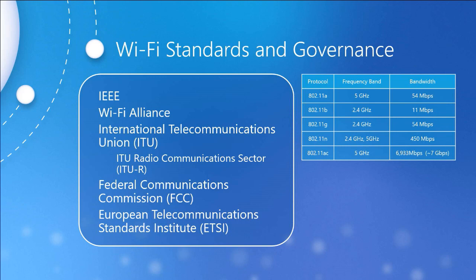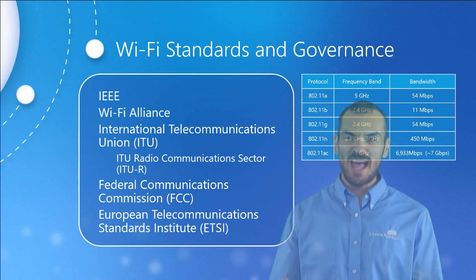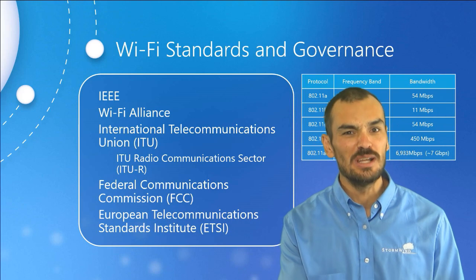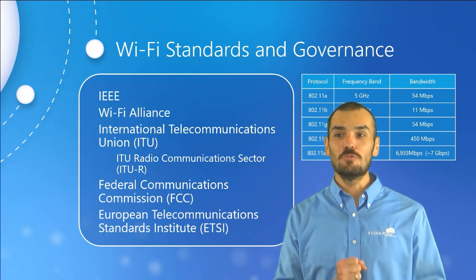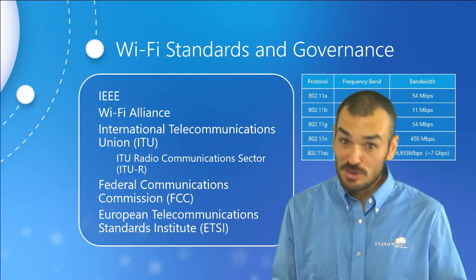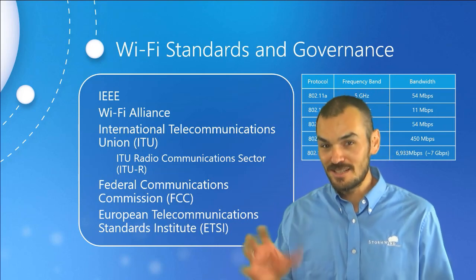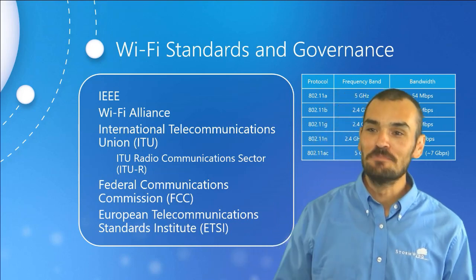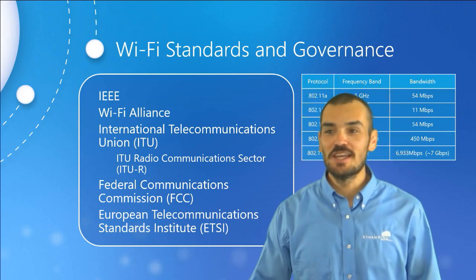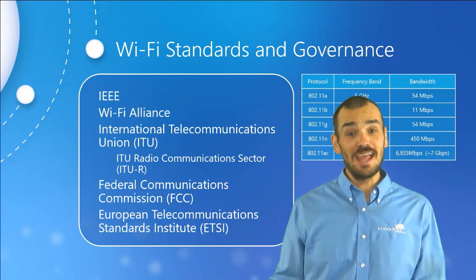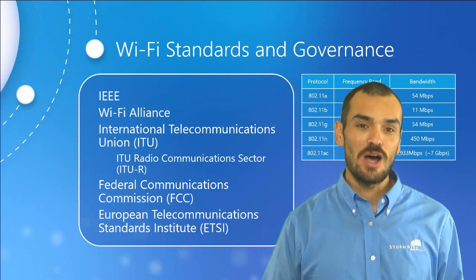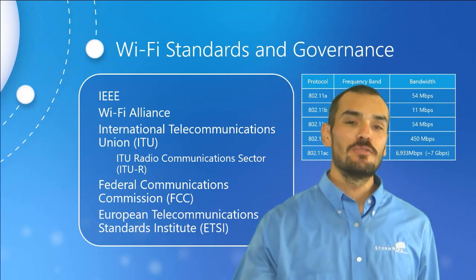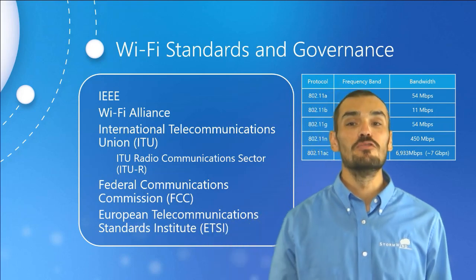To use an analogy: if we were making a chocolate cake, the 802.11 standards would be the flour, the eggs, the milk — the core ingredients. But Cisco may want to make a chocolate cake with an orange ganache, and Ubiquiti wants to make a double chocolate cake. They're both chocolate cakes containing the same core elements, just with a different spin. There needs to be an entity that says this is what we mean by chocolate cake. The IEEE has their definition, but vendors have their own interpretation — insert the Wi-Fi Alliance.